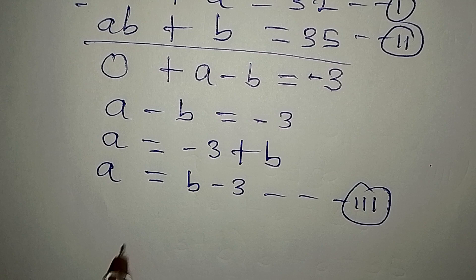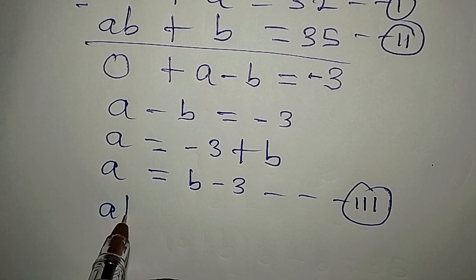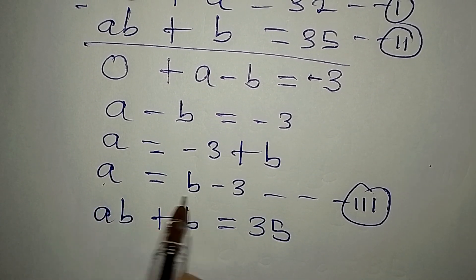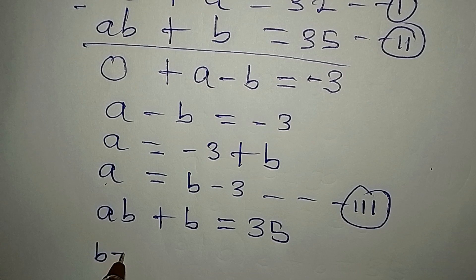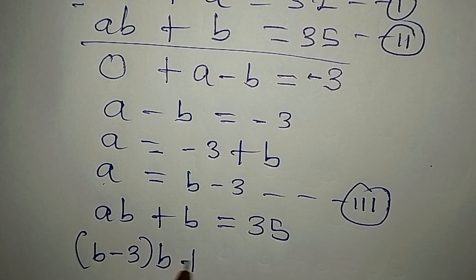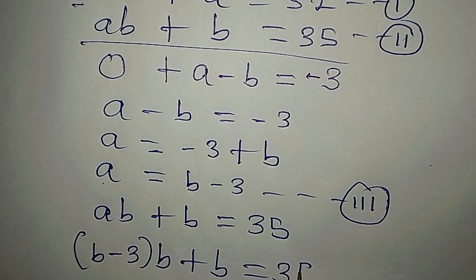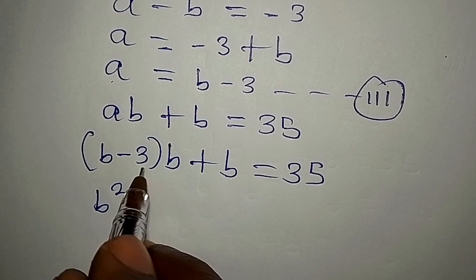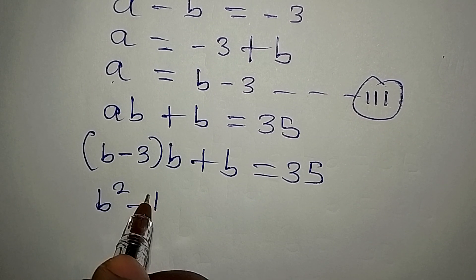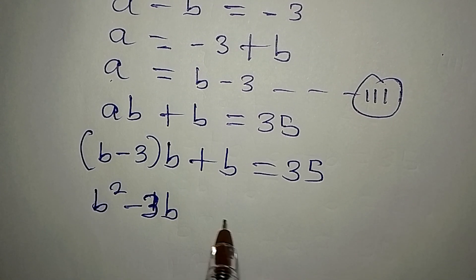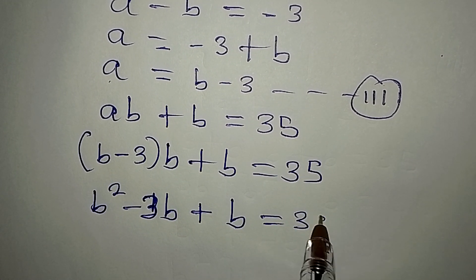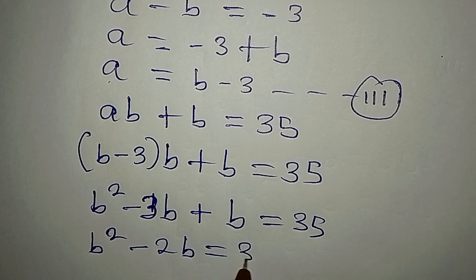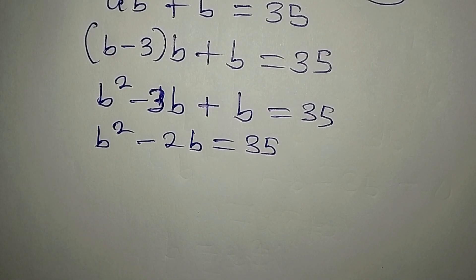Now substitute equation 3 into equation 2, which is AB plus B equals 35. Our A is B minus 3, so write (B minus 3) times B, plus B equals 35. Expanding: B squared minus 3B, plus B equals 35.